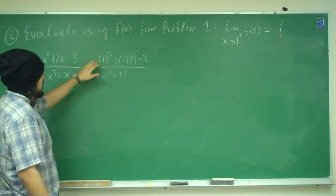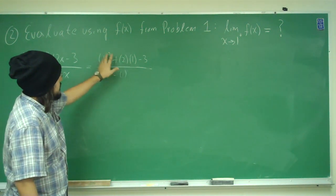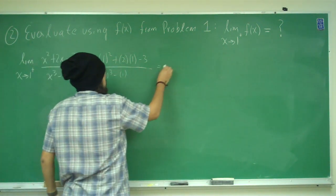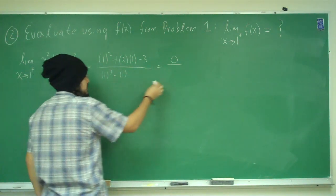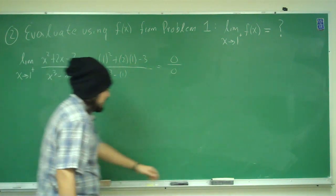Alright, so we do this, we get 1 squared is 1, we get 2 here, so that's 3, 3 minus 3 is 0, and we get 1 cubed, 1 minus 1 is 0. So that's undefined, or indeterminate.